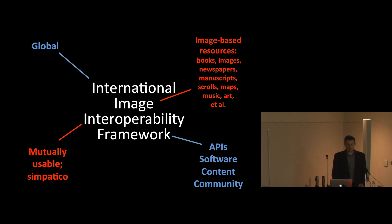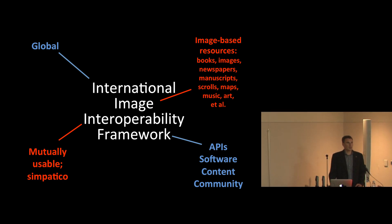When we speak about IIIF, what do we mean? Breaking down the definition: International means global. Image relates to image-based resources — not just pictures, but any information resource that uses images as a primary information carrier: books, images, manuscripts, newspapers, maps, musical scores, and more. By interoperable we mean things that work together well without extensive engineering. By framework we mean multiple things that work together — a set of APIs, software, and content exposed via these APIs.